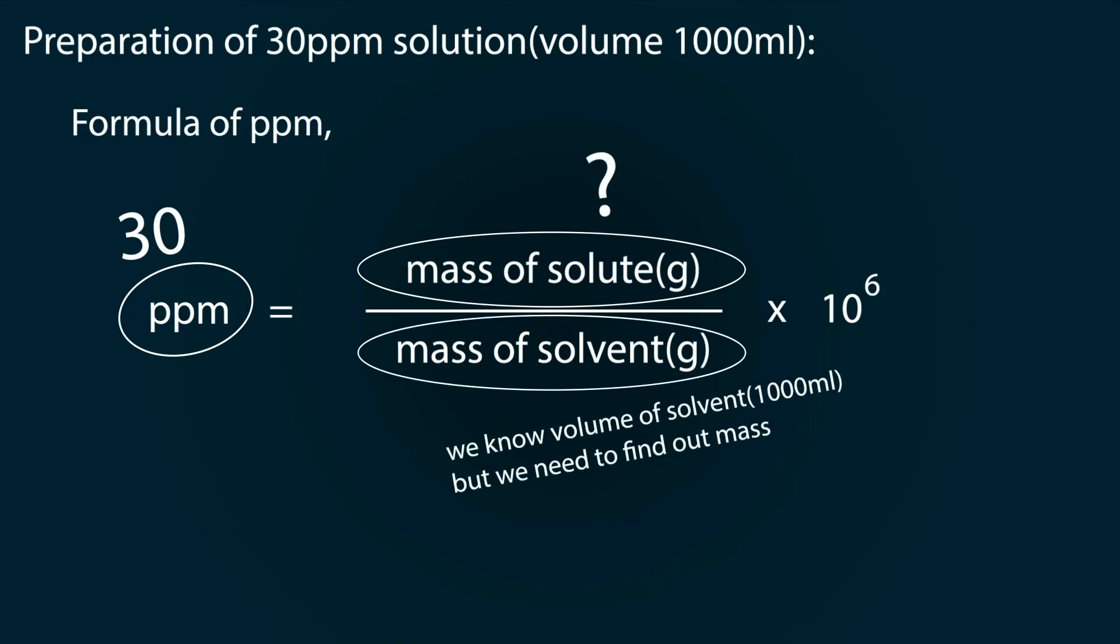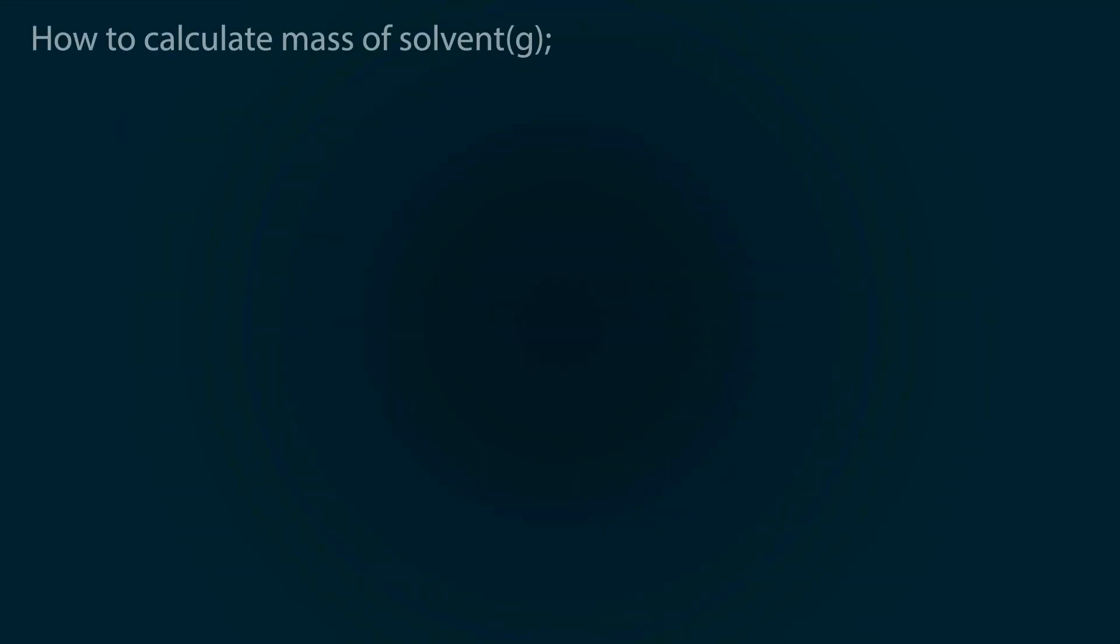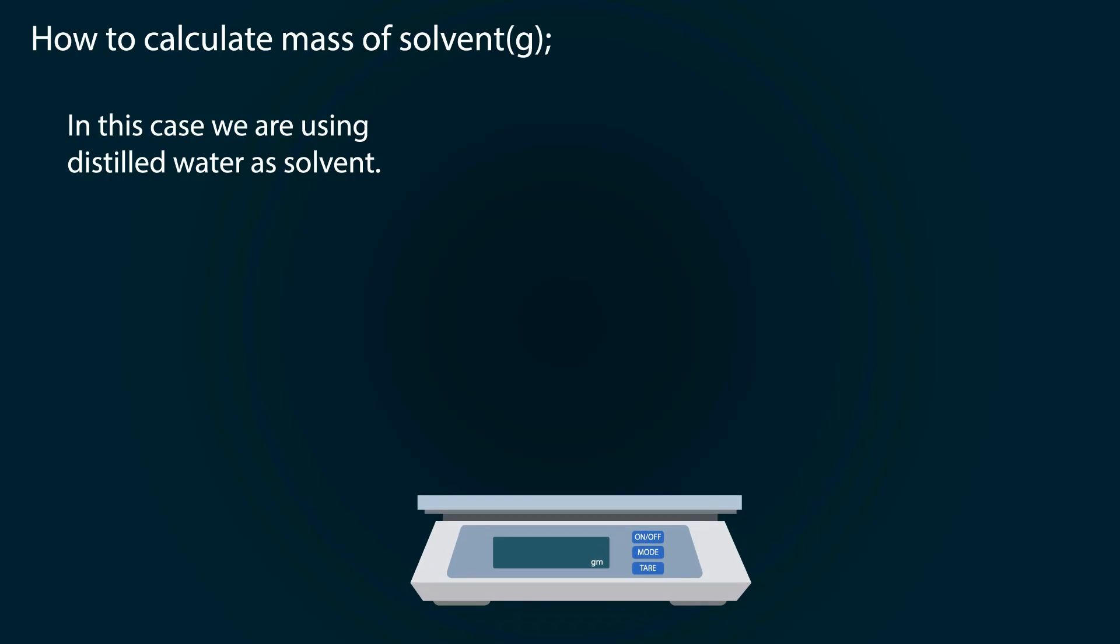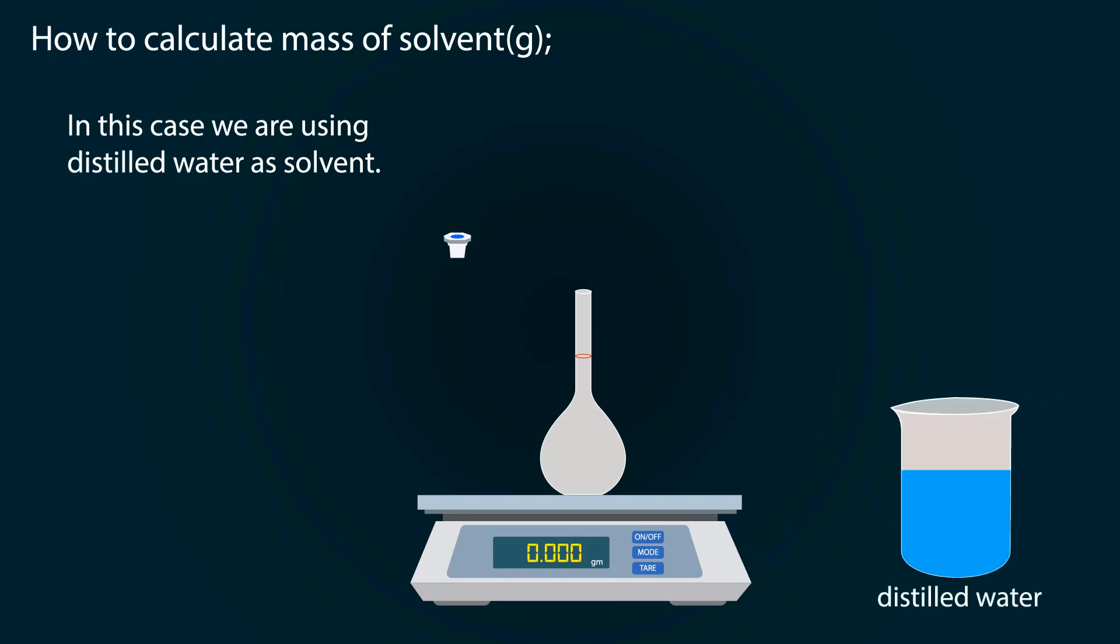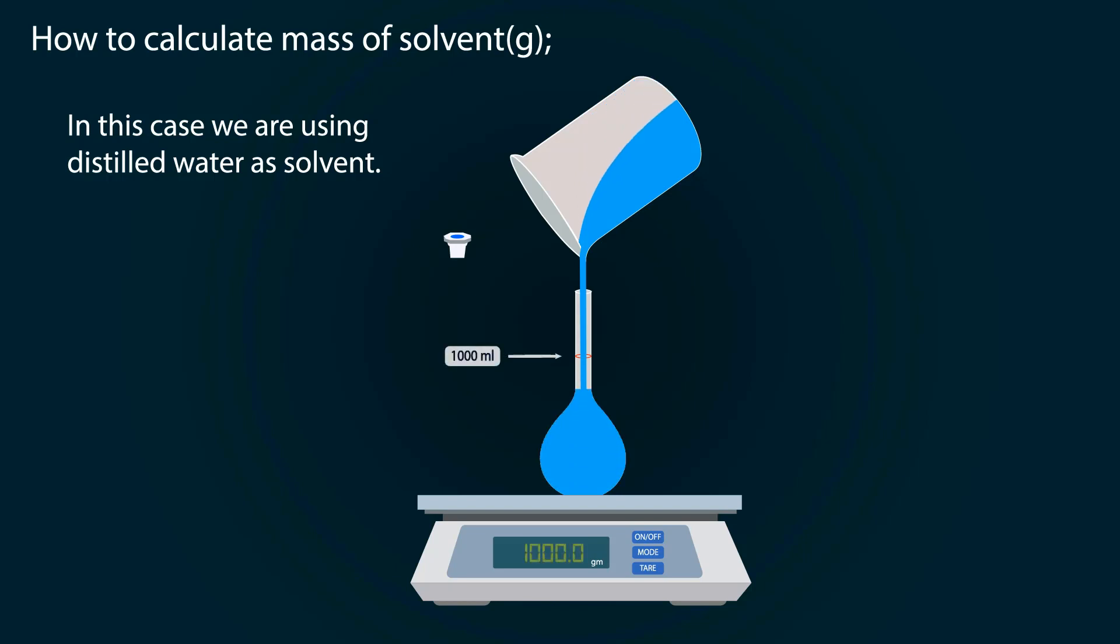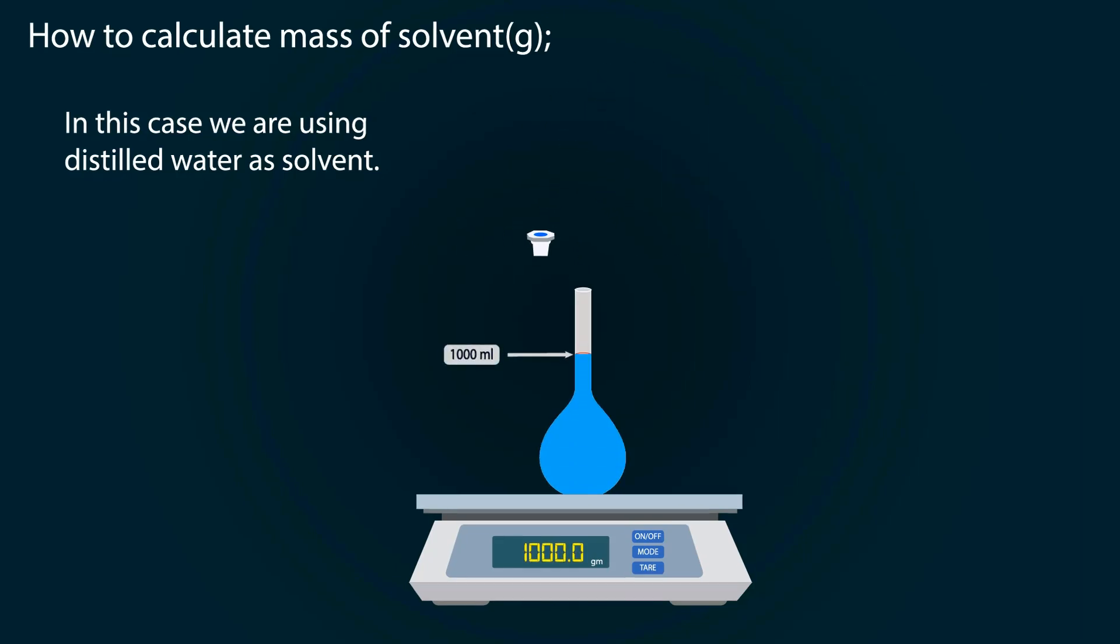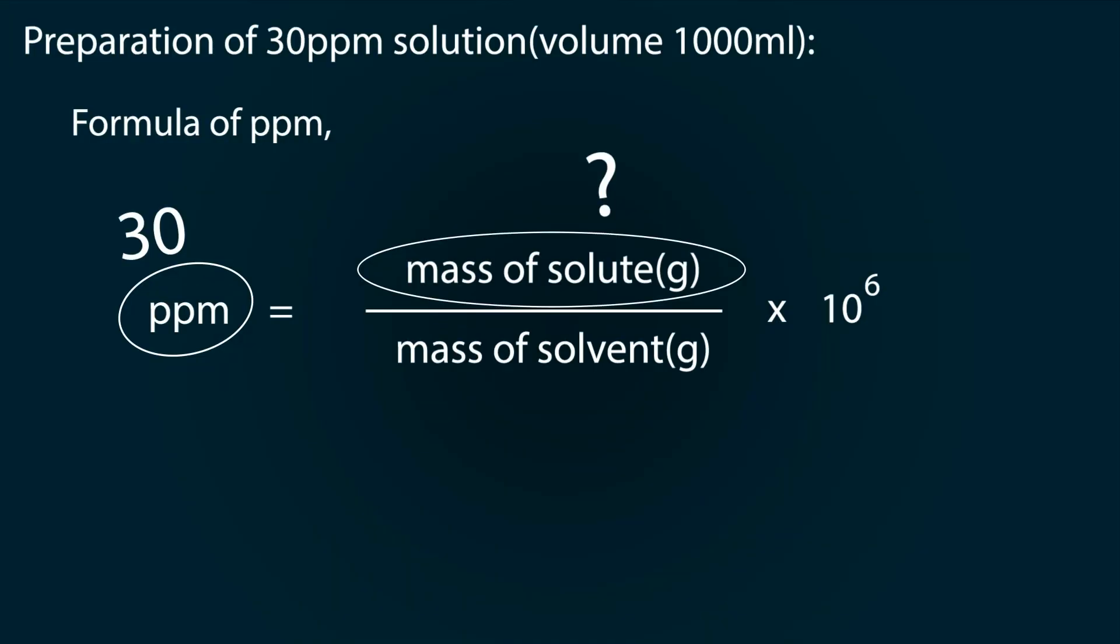But first of all we have to find out mass of solvent of 1000 ml. Here we are using distilled water as a solvent. Take a weight balance and power it on. Put the volumetric flask on it. Don't forget to tare it. Now start adding distilled water into the volumetric flask. Fill the water up to the 1000 ml point and note the reading. We have 1000 grams of solvent.